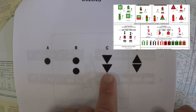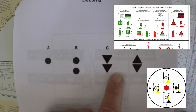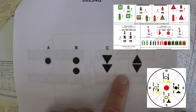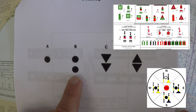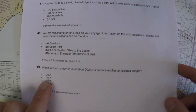Charlie and Delta both correspond to cardinal marks, which have no lateral significance — they are marks that show direction to safe water. That leaves us with choice B. Looking in the light list, you can see that the double spherical top mark goes with the isolated danger. So choice B is the correct one here.